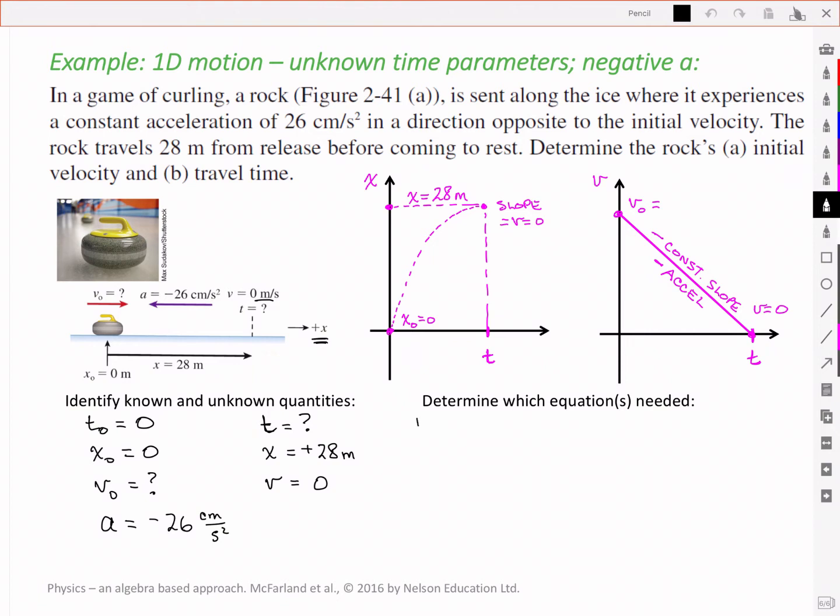So what are we trying to solve for now? The first thing it asks us is to solve for the initial velocity. Well, time is unknown. Our total time is unknown, but our delta x is known. So again, it suggests that we want to look at something that doesn't involve the time, but does involve the displacement.